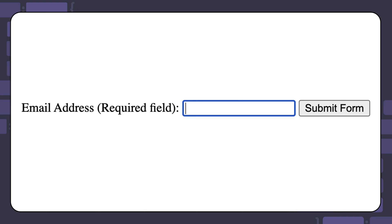When the user clicks on a form control or selects it with the keyboard's tab key, then that means it is in the focused state. Here is an example of that same input in a focused state. Most browsers will show a blue highlighted border around the input, but you can choose to add additional styles in CSS.